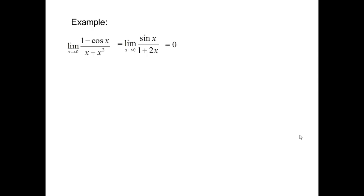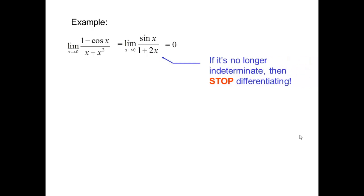So now consider an example: x tends to 0 of (1 - cos x)/(x + x²). I differentiated it — numerator separately, denominator separately. The differentiation of 1 is 0, cos x gives minus sin x, and the denominator x + x² gives 1 + 2x. Now it is no more indeterminate because if we substitute x = 0 we get 0 by 1, which is 0.